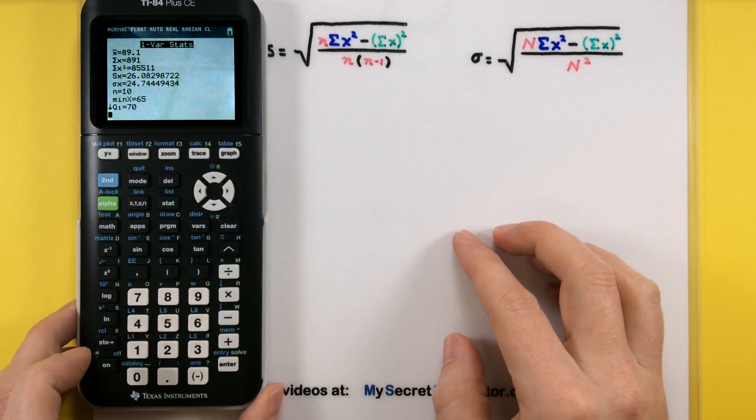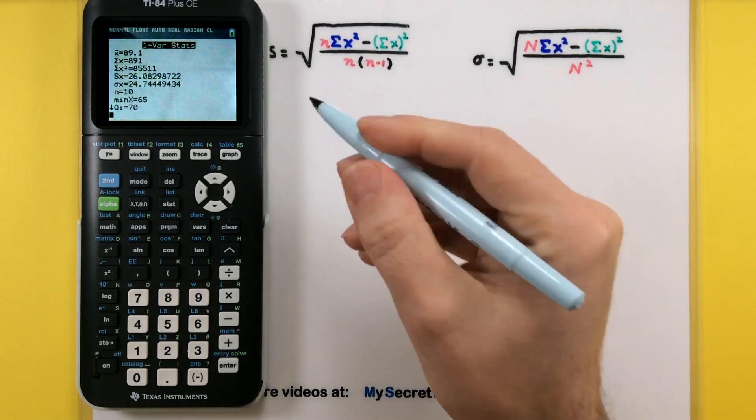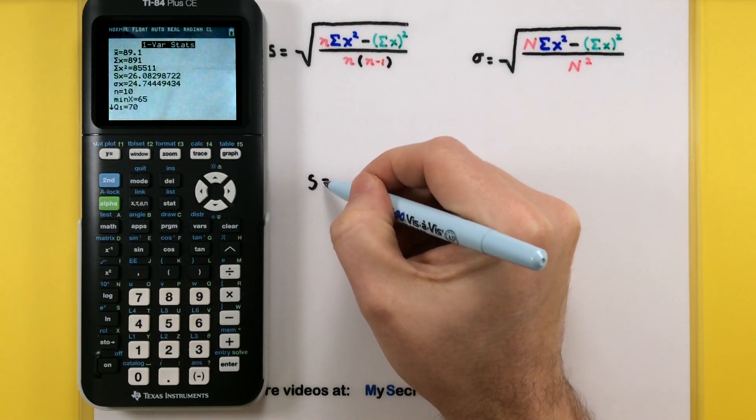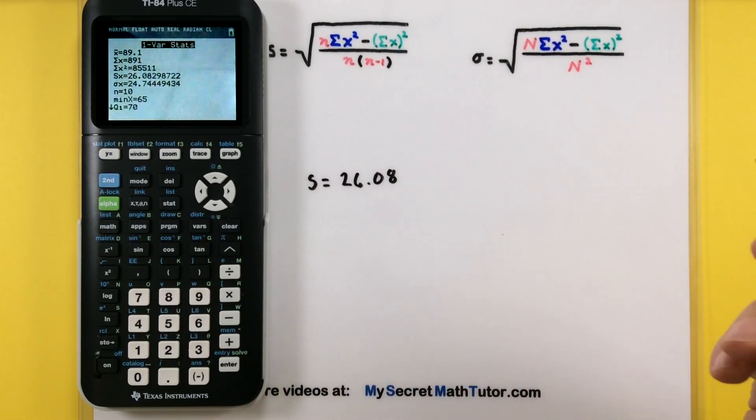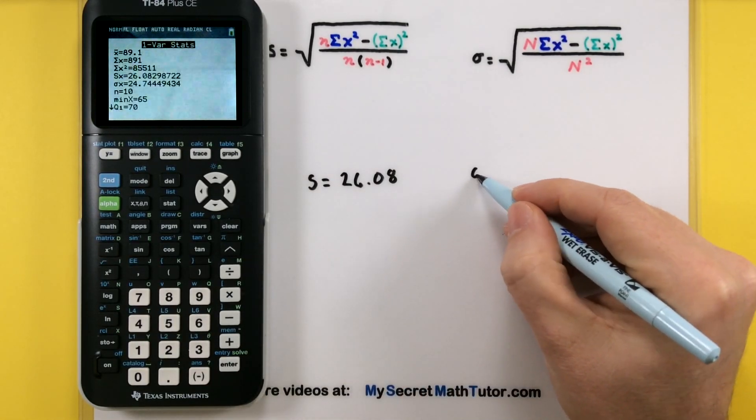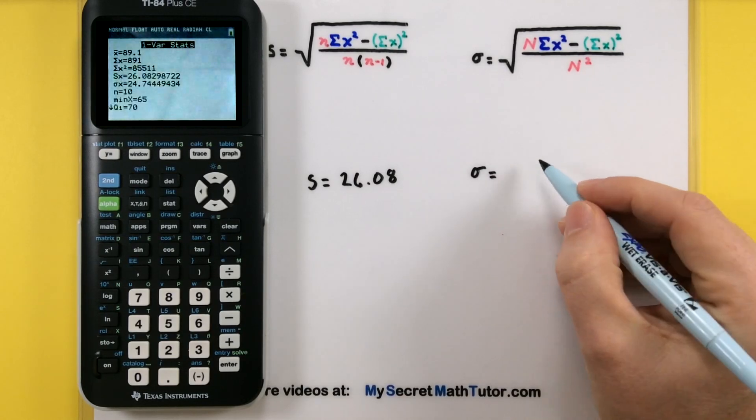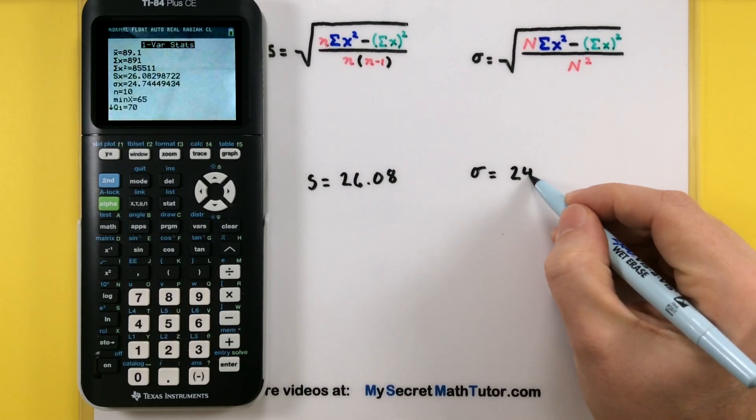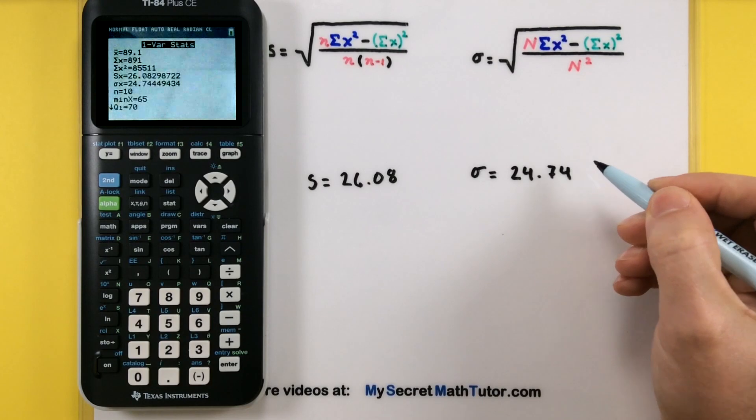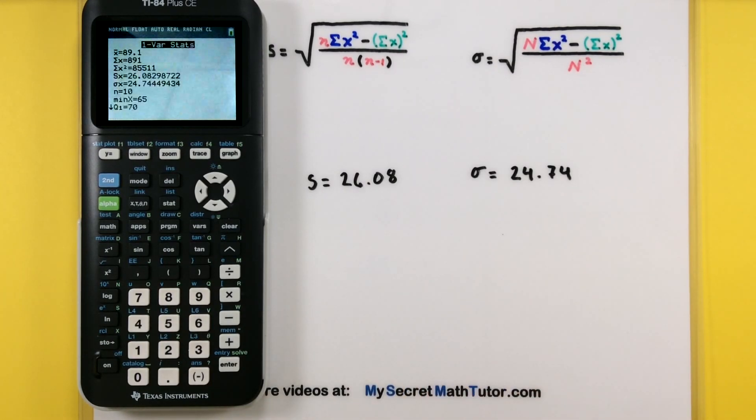So let's go ahead and write those two values down. So if it comes from a sample, this would be 26.08. And various numbers after the decimal, if this came from a population, we'd get something like 24.74. And of course, these are going to be different numbers because the formulas are just ever so slightly different.